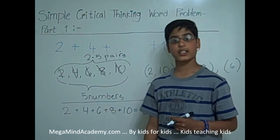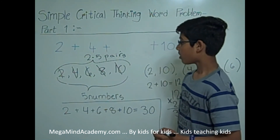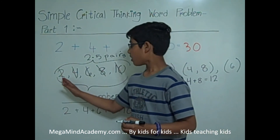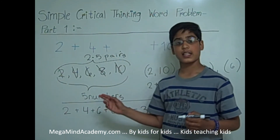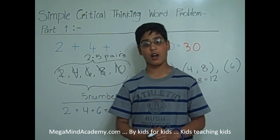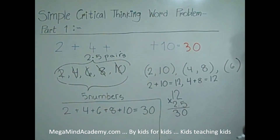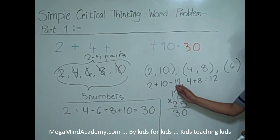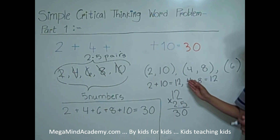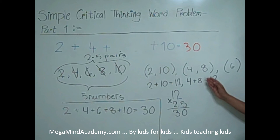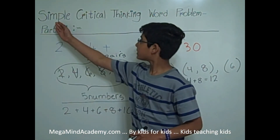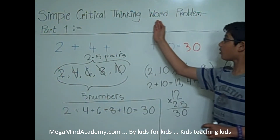One thing to keep in mind is that to make the pairs, we use the first number and the last number because then each pair has the same sum. That is why 2 plus 10, which equals 12, is the same as 4 plus 8, which also equals 12. Today we learned about simple critical thinking word problems, Part 1.